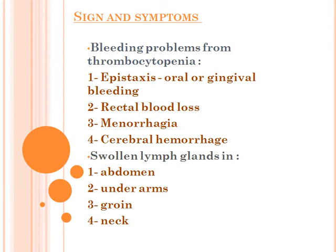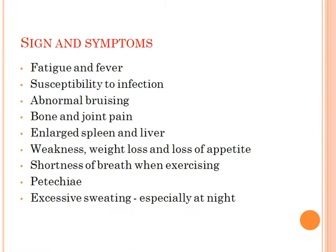Signs and symptoms include bleeding problems from thrombocytopenia such as epistaxis, oral or gingival bleeding, rectal blood loss, menorrhagia, and cerebral hemorrhage. Swollen lymph glands in the abdomen, underarms, groin, and neck are also common. General signs and symptoms of leukemia include fatigue, fever, susceptibility to infections, abnormal bruising, bone and joint pain, enlarged spleen and liver, weakness, weight loss, loss of appetite, and shortness of breath when exercising.